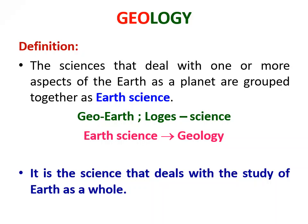What do you understand by logy? Logy is nothing but the science applied to soil, rock or earth. As far as the definition goes, we can say the sciences that deal with one or more aspects of the earth as a planet are grouped together as earth science. So geo means earth, logos means science — earth science is nothing but geology.